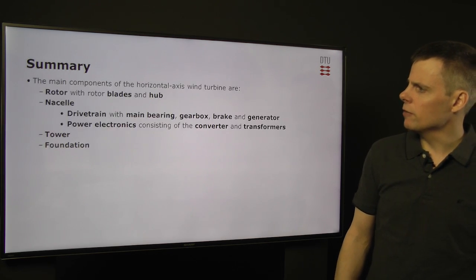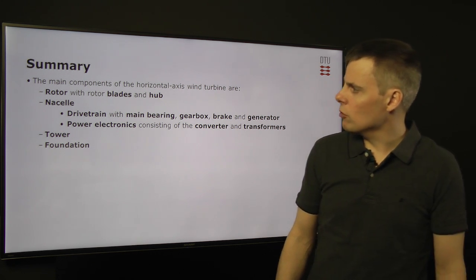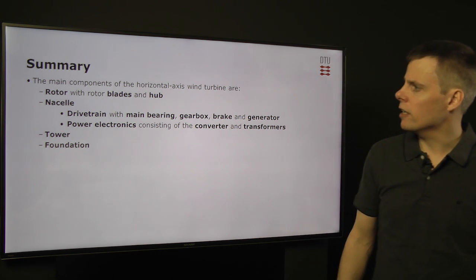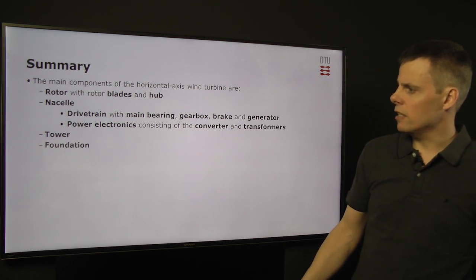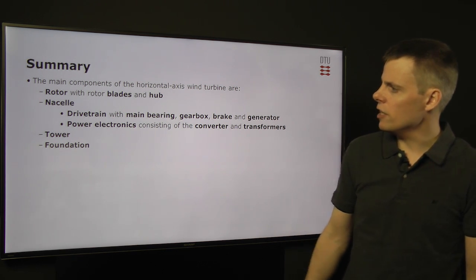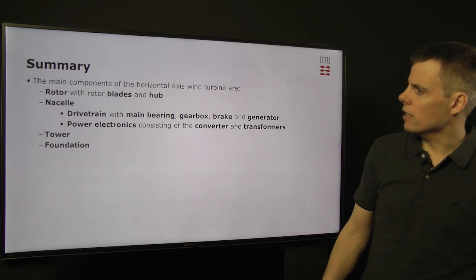So, we come to the summary. The main components of a horizontal axis wind turbine is the rotor blade, the nacelle, the tower, and its foundation.